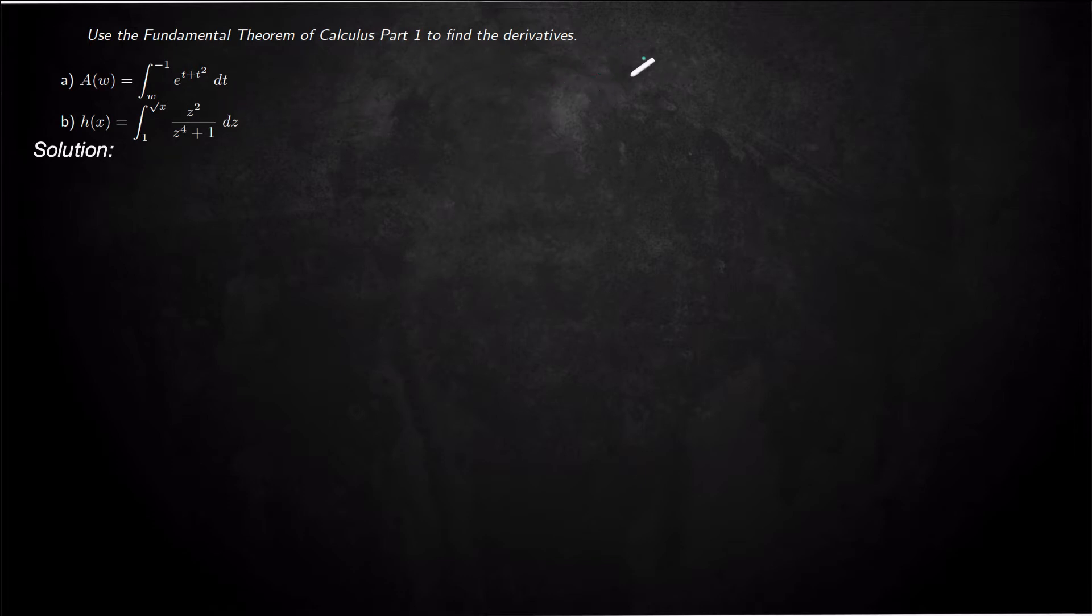The fundamental theorem of calculus part 1 basically says if you have an integral function, so that's a function that is an integral, the variable x is actually going to be the upper bound of integration.